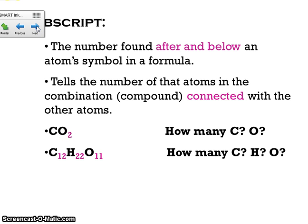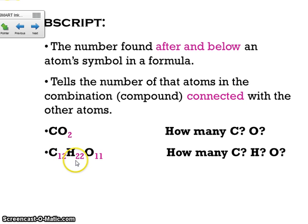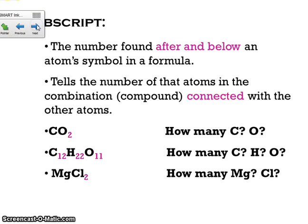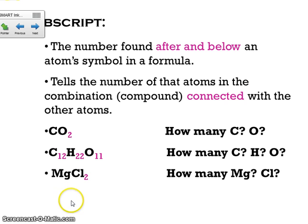Here's another example — this is for sugar: C12H22O11. All three symbols have subscripts this time. So how many C's, H's, and O's? We have 12 C's, 22 H's, and 11 O's. Last one: MgCl2. If there's no subscript after a symbol, that means you just have one. So we'll have one Mg and two Cl's.